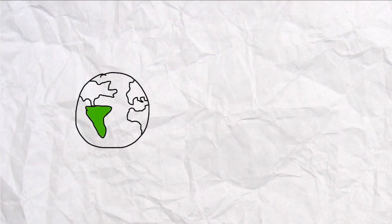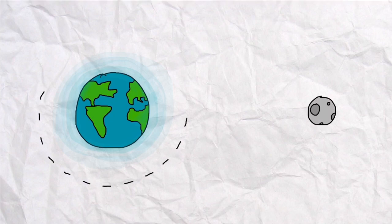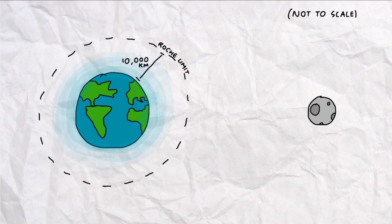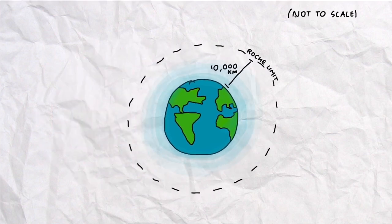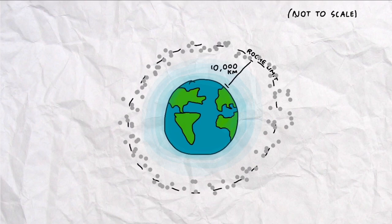As a scale of reference, the Roche limit between the Earth and the Moon is just under 10,000 kilometers, which means that if the Moon were to swing around Earth almost 40 times closer than it does today, the Moon as we know it would not exist. Instead, it would most likely be broken up and form a ring around our planet.